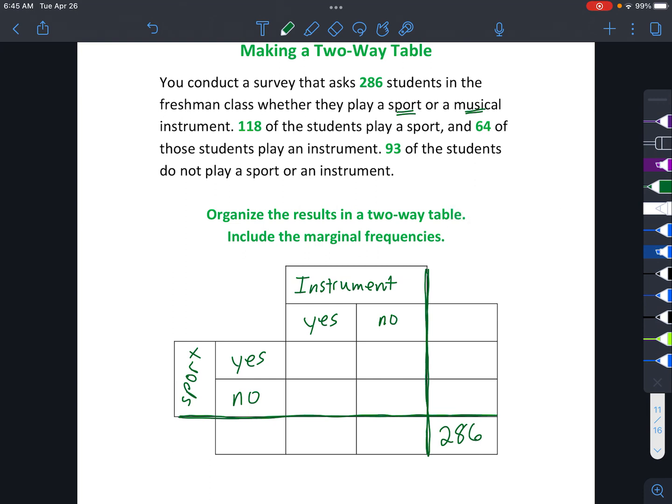Okay. Now we've got 118 of the students play a sport. So if 118 students total play a sport, whether they play a musical instrument or not, that goes over there. And we can also fill in total here. And total there. And then 64 of those students play an instrument. So they're the ones that said yes to both of those. And then 93 of the students do not play a sport or an instrument, which would be no and no, which is over here.